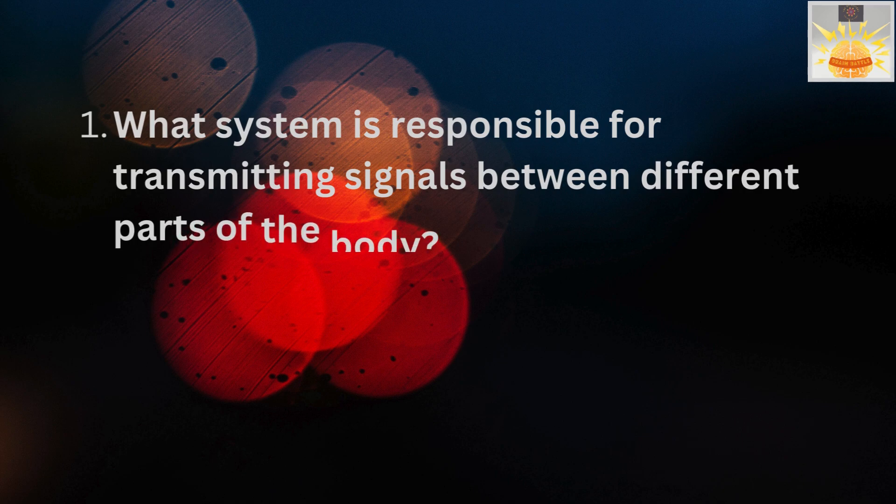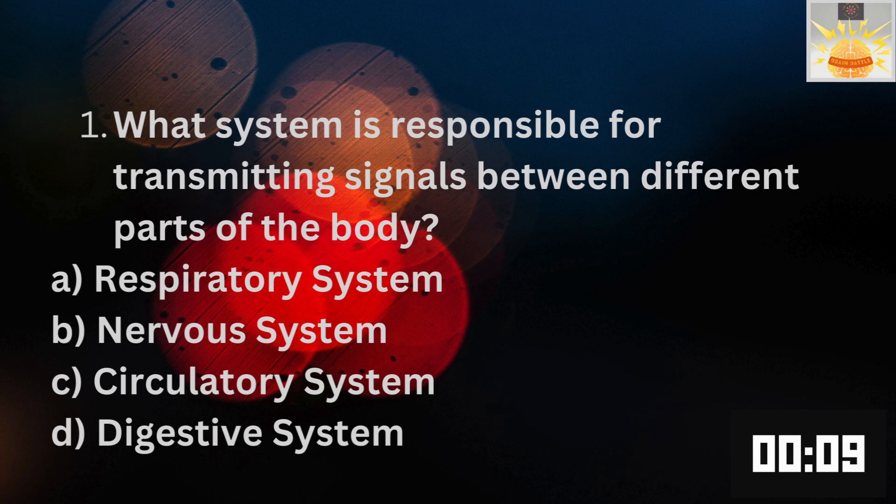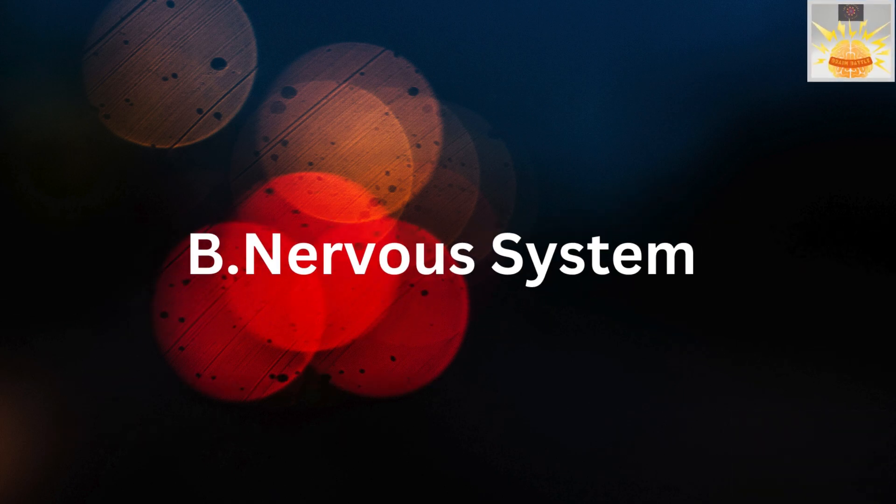What system is responsible for transmitting signals between different parts of the body? A. Respiratory system. B. Nervous system. C. Circulatory system. D. Digestive system. The right answer is B. Nervous system.